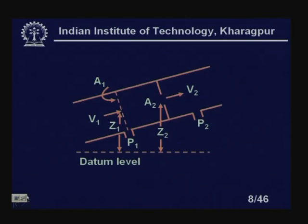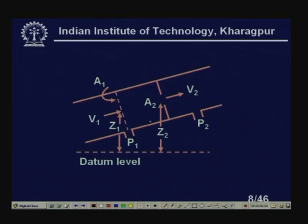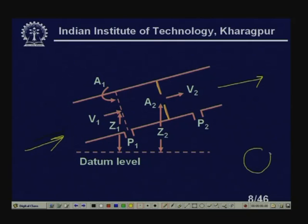A restriction or constriction is placed in the pipe and the differential pressure developed across the restriction is measured. This is a very simple principle — just applying Bernoulli's equation, we can find the flow rate, and the differential pressure output is calibrated in terms of volume flow rate. In a typical schematic, this is a pipe with liquid flowing through it and a restriction in the form of an orifice — a circular plate with a concentric hole in the middle.